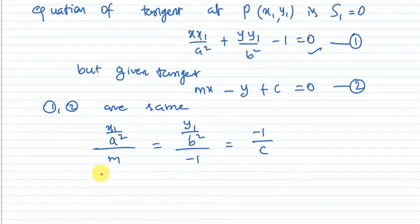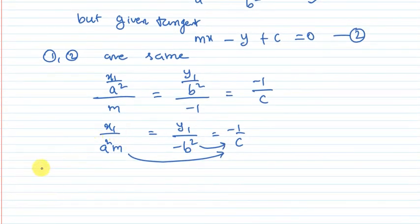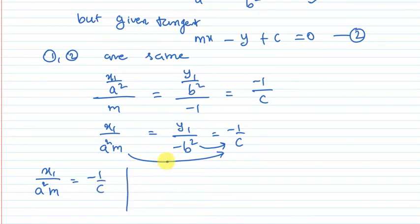Now we simplify. From the ratios: x1 by a squared m equals minus 1 by c (first and last), and y1 by minus b squared equals minus 1 by c (second and last). Therefore x1 equals minus a squared m by c.